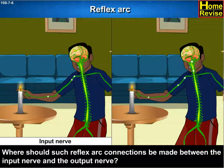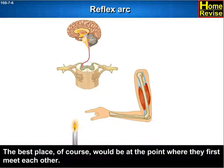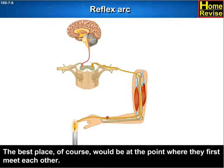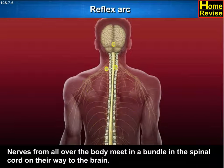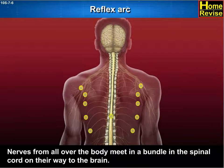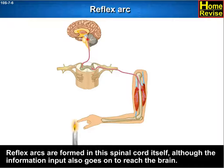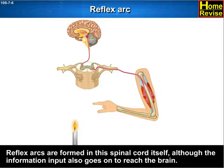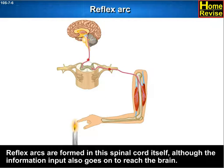Where should such reflex arc connections be made between the input nerve and the output nerve? The best place would be at the point where they first meet each other. Nerves from all over the body meet in a bundle in the spinal cord on their way to the brain. Reflex arcs are formed in the spinal cord itself, although the information input also goes on to reach the brain.